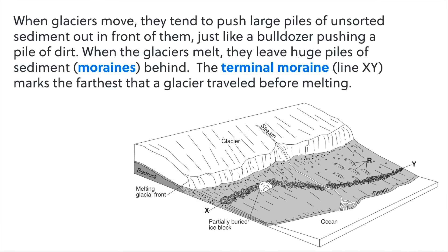When the glaciers move, they push this till — this unsorted sediment — out in front of them, very similar to a bulldozer pushing a pile of soil. When the glaciers then melt, they leave behind these piles of sediment, and these are called moraines.